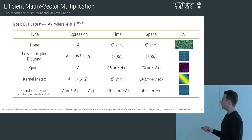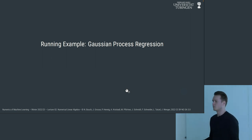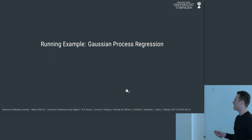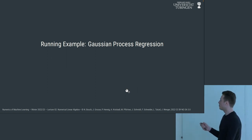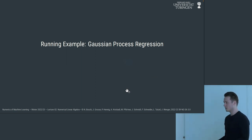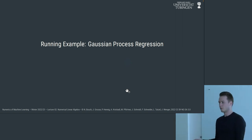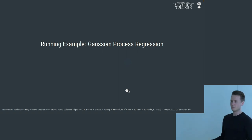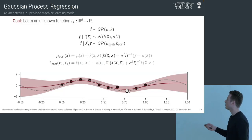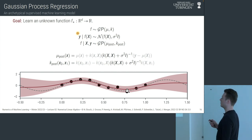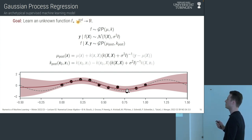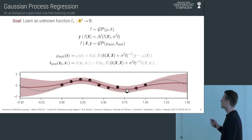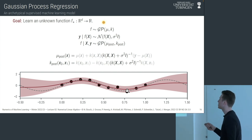Now to a concrete algorithm. We'll focus on Gaussian process regression — note this also applies to other methods, notably kernel ridge regression. Our goal is to learn an unknown function f* from a d-dimensional input space to the reals. Since this is a Bayesian regression method, we place a prior on the unknown function — a probability measure over functions with mean function μ and a kernel function encoding the covariance between two function points.